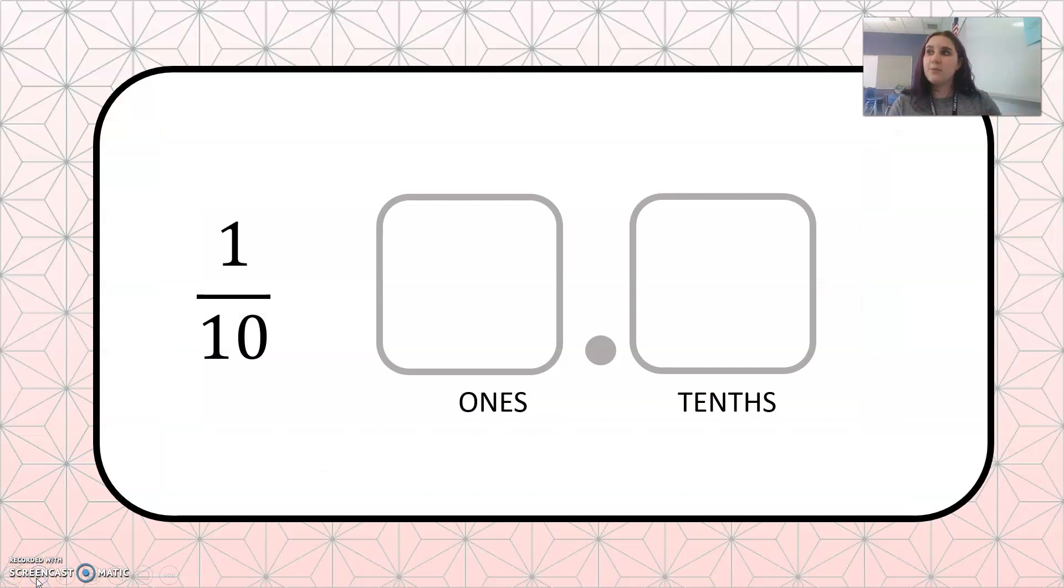All right, let's look at the first one. Here we have 1 tenth. So when we have our place value chart, I can see I have 1 in the tenths place. Then we can put a placeholder 0 in the ones place so that this number is easier to read. It's a lot easier to read 0.1 than just .1. So it's a good habit to write a 0 before: 0.1, 1 tenth.